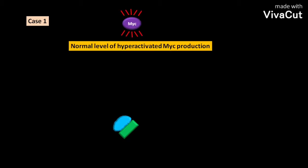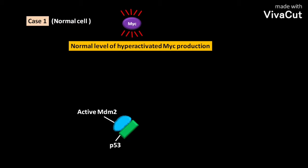Let us consider case 1, in which a normal level of hyperactivated MYC production is occurring in a normal cell. This MYC protein acts as mitogenic stimulation. At this normal level, the active MDM2 protein is bound to p53 protein, and this bound active MDM2 protein promotes p53 protein degradation.